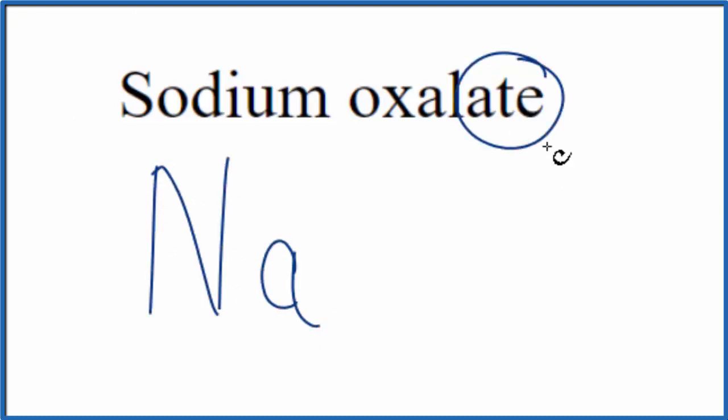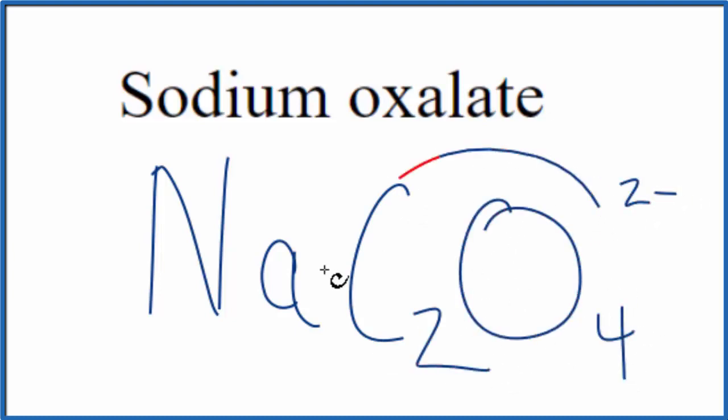For oxalate, you see this ATE at the end of it. It's not going to be on the periodic table. So you either memorize that the oxalate ion is C2O4, and it has a 2- ionic charge on the whole ion here. Or, if you're allowed, you look it up on a table of polyatomic ions.